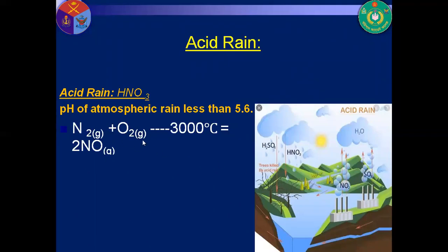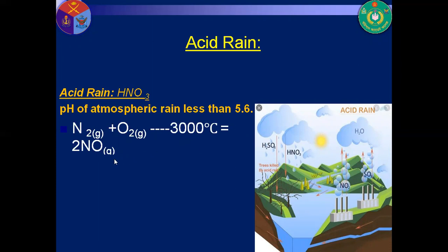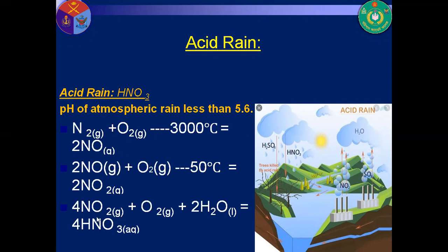Nitrogen and oxygen react with each other in the presence of 3000 degree centigrade temperature and form nitrogen monoxide. Then, nitrogen monoxide reacts with oxygen at high temperature to form nitrogen dioxide. Nitrogen dioxide then reacts with oxygen and water to form nitric acid, which mixes with water to form acid rain containing nitric acid.